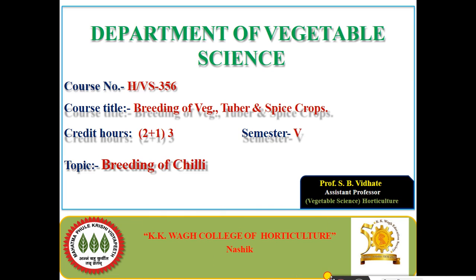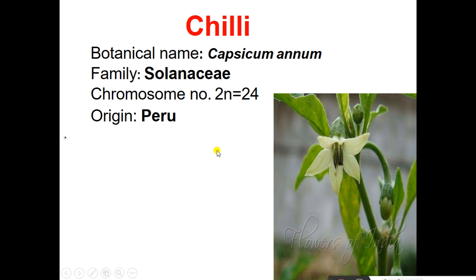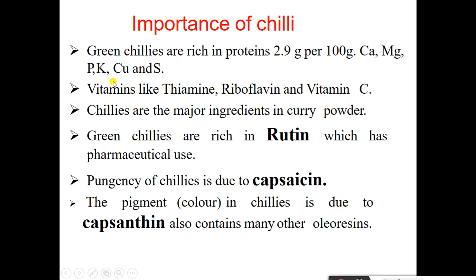Hello everyone, I am Sandeep Vidate. Today we learn about the breeding of chili — breeding methods and breeding objectives. We discuss one by one this important crop, chili. First, the botanical name of chili is Capsicum annuum, family Solanaceae, chromosome number 2n = 24, its origin is the Peru region.